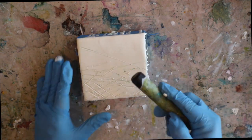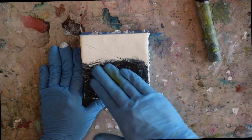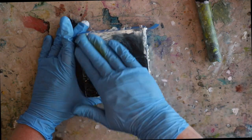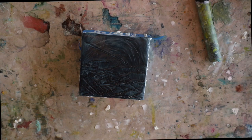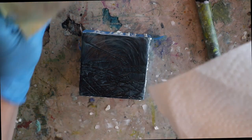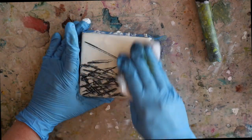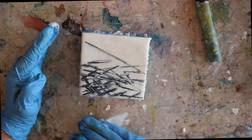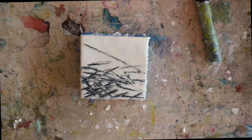I simply take a paper towel with some vegetable oil, and it removes all of the extra oil paint and only leaves what's in the crevices.